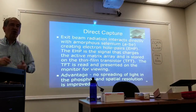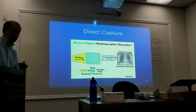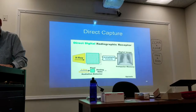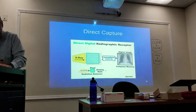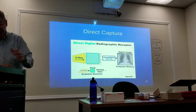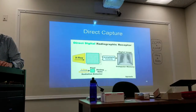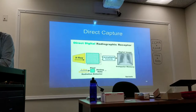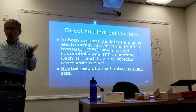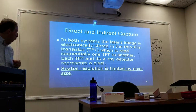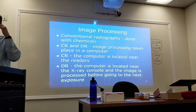With direct capture, x-rays strike this matrix of pixels and use amorphous selenium. 'Amorphous' just means uncertain shape. The image is acquired as a matrix of pixels and then converted from analog to digital. With both systems, the latent image is stored in thin film transistors. Spatial resolution is limited by pixel size.